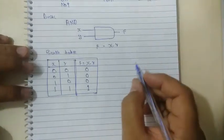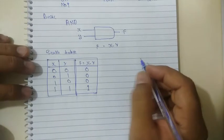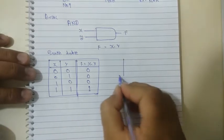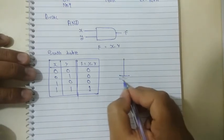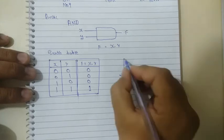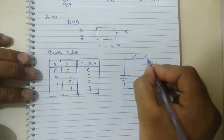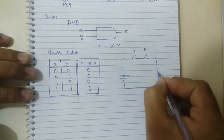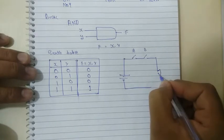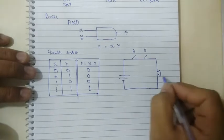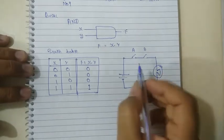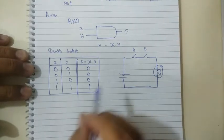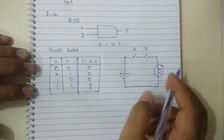For the electrical equivalent circuit, we apply a battery with switches A and B connected in series with a lamp. The lamp will glow only when both A and B are closed. So we can say that this is the AND gate configuration.